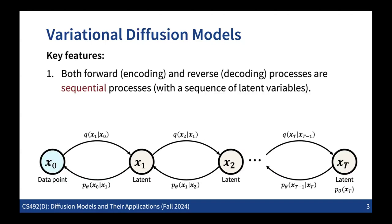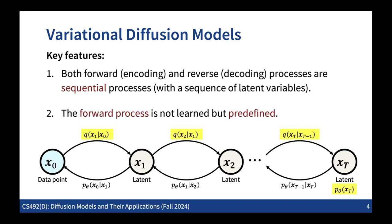There are some key features in the diffusion models. Moving from GAN and VAE to diffusion models, the first key feature is that we have sequential processes, both for the forward process and also the reverse process - a sequence of latent variables with a sequence of mapping processes. The second key feature is that in diffusion models we are not going to learn the forward process - it is predefined. We don't have any variational form for the transitional distribution in the forward direction; we only learn the reverse process.